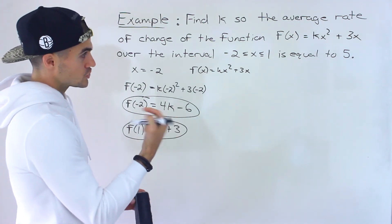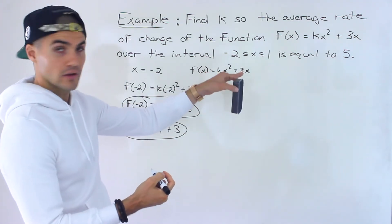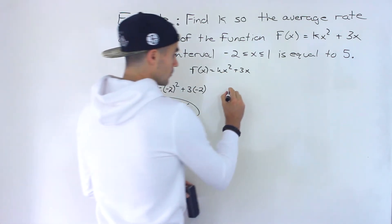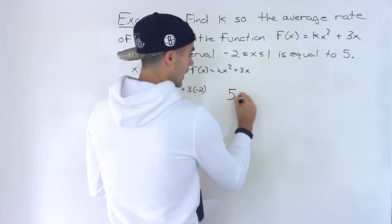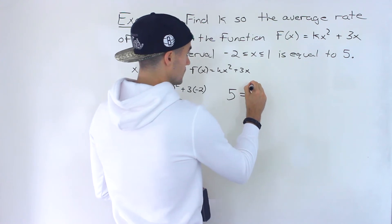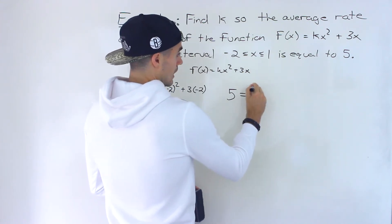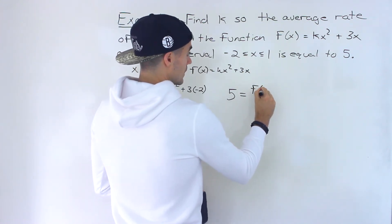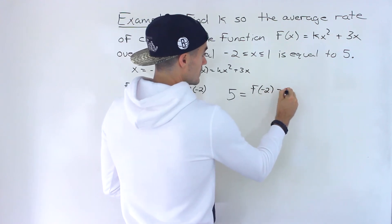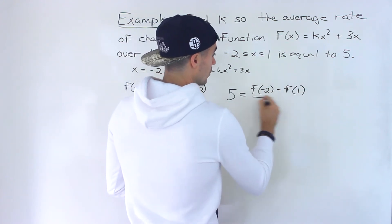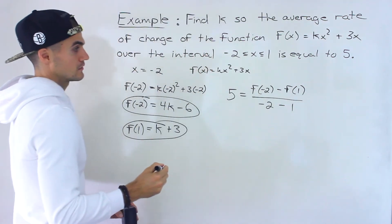And so we're told that the average rate of change on this interval is 5. So basically what we can do is say the average rate of change equals f(negative 2) minus f(1) all over negative 2 minus 1.